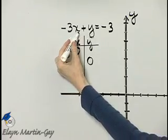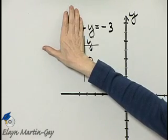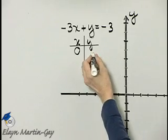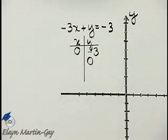Now, if x is 0, notice this term, negative 3 times 0, is gone. And we can do this mentally, y must be negative 3. So we have the ordered pair solution 0, negative 3.